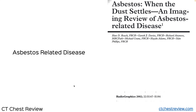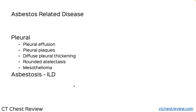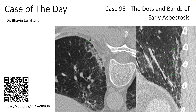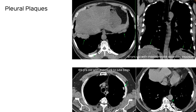There's a great article — about 23 years old but still absolutely brilliant — covering pleural diseases and asbestosis, which is asbestos-related lung disease. A couple of months ago in Case 95, I discussed the dots and bands of early asbestosis. Asbestosis refers specifically to interstitial lung disease caused by asbestos.